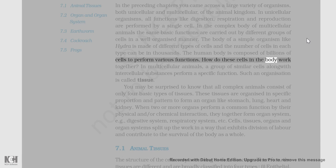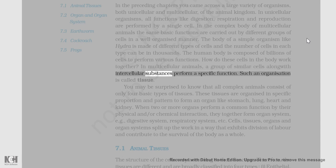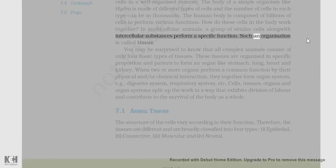How do these cells in the body work together? In multicellular animals, a group of similar cells along with intercellular substances perform a specific function. Such an organization is called tissue.